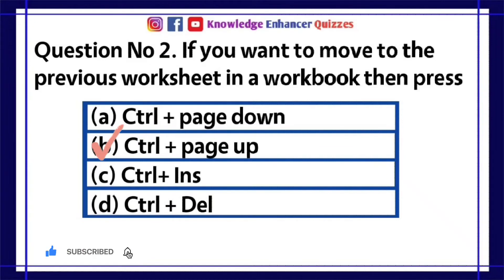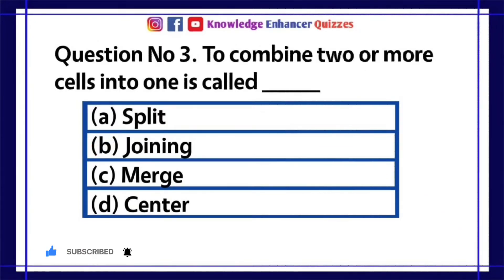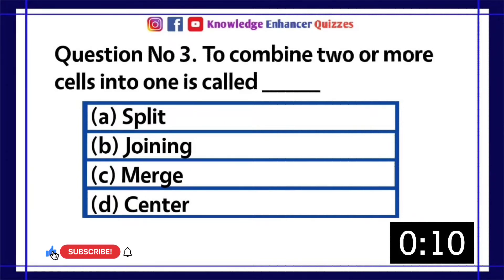Option B is the right answer. Question number 3: To combine two or more cells into one is called: A. Split, B. Joining, C. Merge, D. Center.